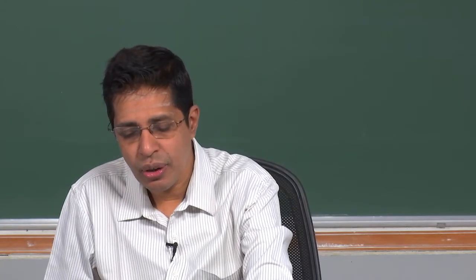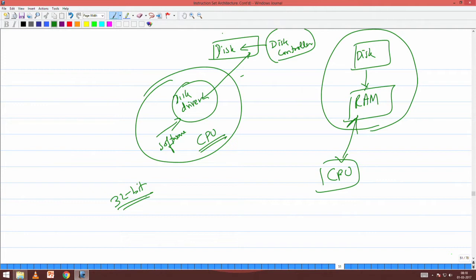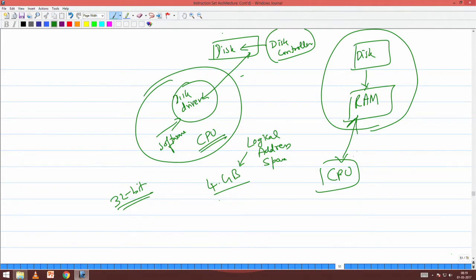Let us look at what is happening at the RAM level. When writing a program on a 32-bit architecture, I tell the programmer and compiler: you can address anywhere in this 32-bit space — I am giving you a 4GB address space. Every program is given a 4GB address space. But ultimately, this 4GB is called a logical address space because physically it may not be present. Physically on your RAM, I may have only 2GB.